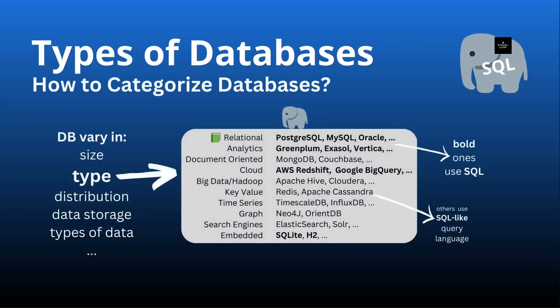Now we are going to talk about what types of databases are out there. There are many ways we can categorize databases. They may be different in size, in type, in distribution, in data storage, and so on.